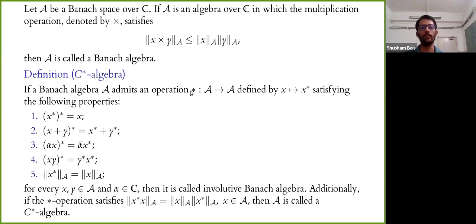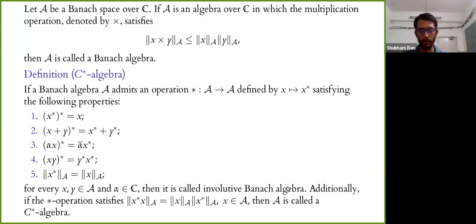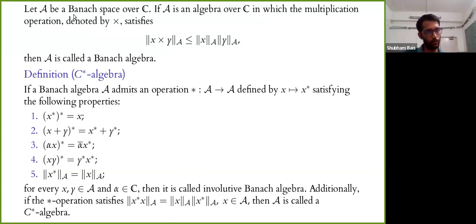If we have a Banach space over the complex field C, and on this Banach space A we also have a multiplication operation satisfying the norm condition, then A is called a Banach algebra. If we additionally have a unary star operation from A to A satisfying five compatibility conditions with the algebra operations, that operation is called an involution and the algebra is an involutive Banach algebra. If the star operation further satisfies the C*-condition with respect to the norm, then A is called a C*-Star algebra. When multiplication is commutative, we call it a commutative Banach algebra; with a multiplicative identity, it is a unital Banach algebra.